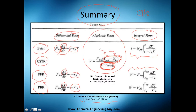But be sure you're thinking globally, because the conversion at the inlet of a single-pass reactor will be zero, and the outlet can take a value from zero to one hundred percent. If you set the inlet as always zero, you'll go back to our first equation.